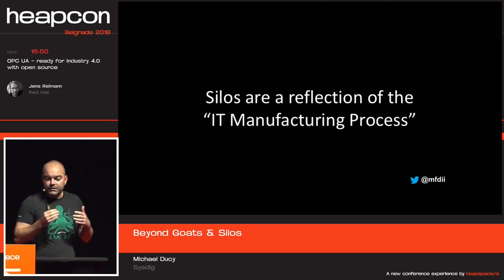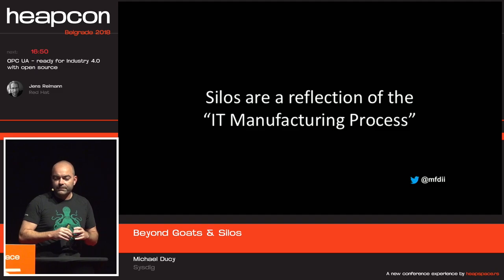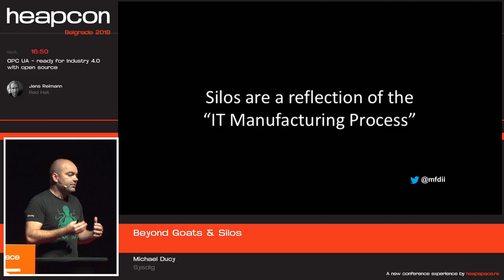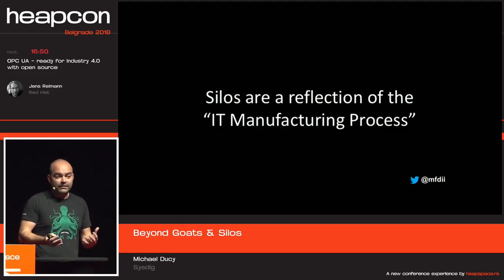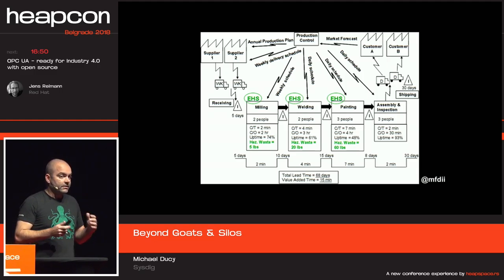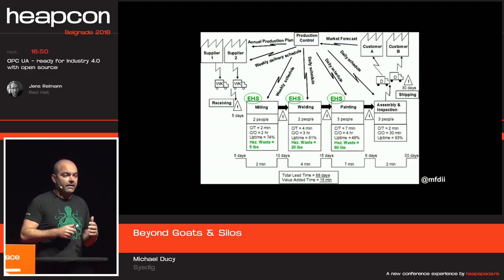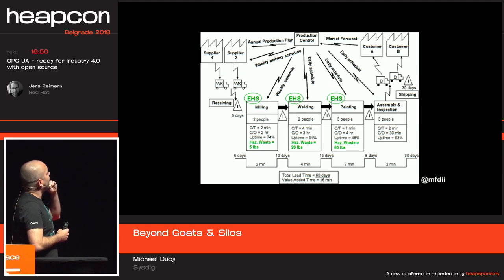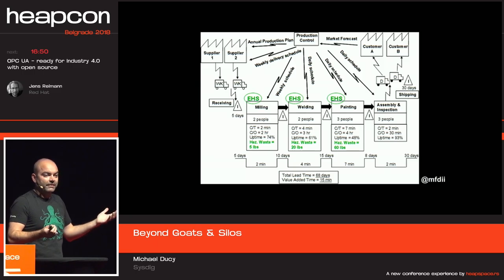We've talked for the last five or six years in the world of DevOps about how you can apply manufacturing process improvements to the world of IT. One of those things talked about a lot early on, and still discussed in organizations going through DevOps transformation, is something called value stream mapping — a manufacturing process.